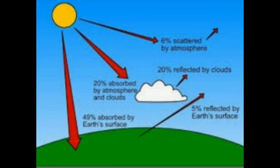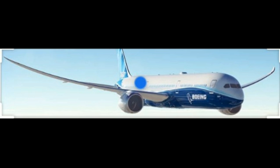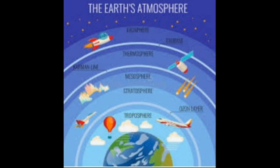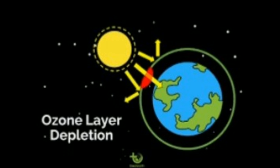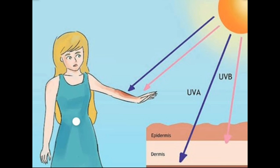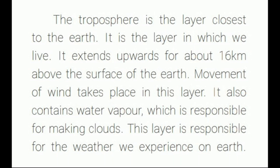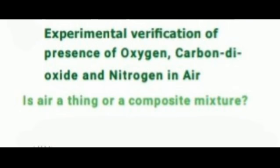Aircraft easily fly above this layer to avoid strong winds and bad weather. The stratosphere lies above the troposphere. This layer has the ozone layer in it. The ozone layer protects all life on earth from the harmful ultraviolet rays of the sun.